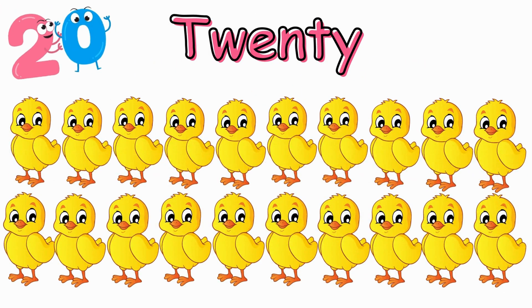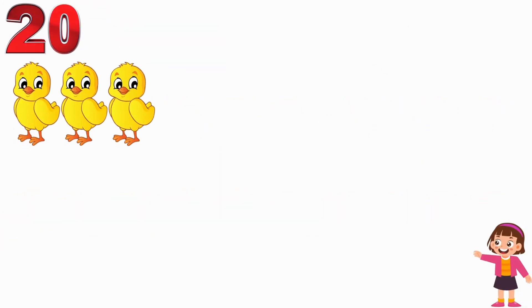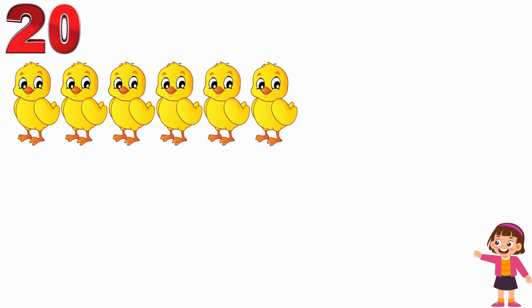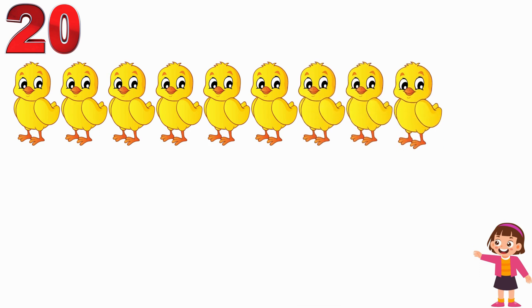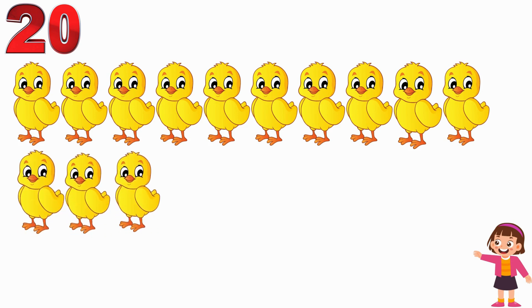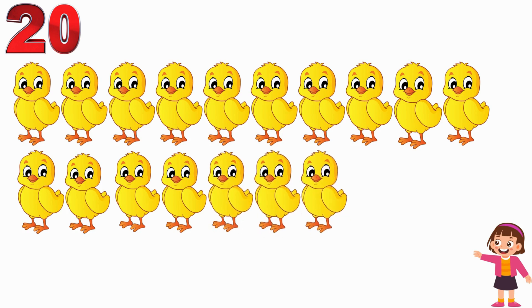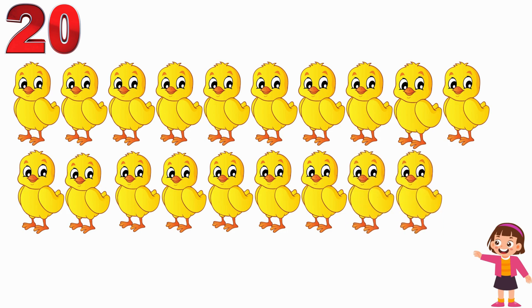Twenty. Twenty chicks. One. Two. Three. Four. Five. Six. Seven. Eight. Nine. Ten. Eleven. Twelve. Thirteen. Fourteen. Fifteen. Sixteen. Seventeen. Eighteen. Nineteen. Twenty.